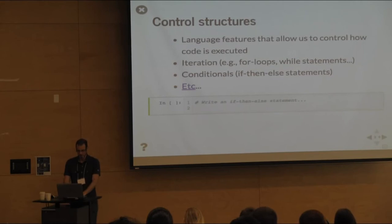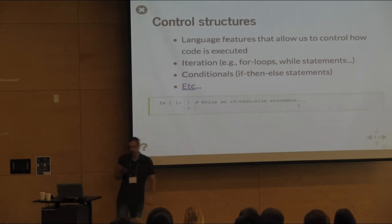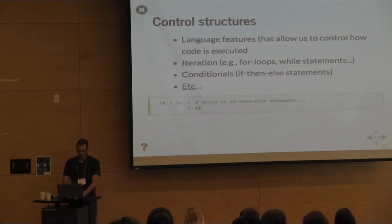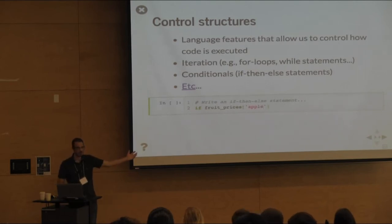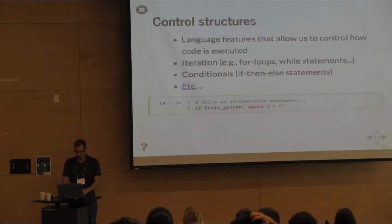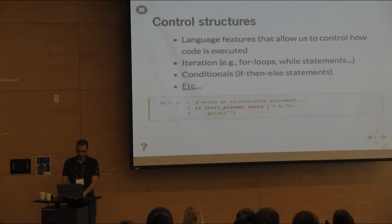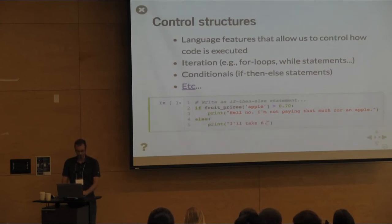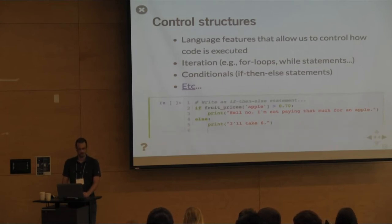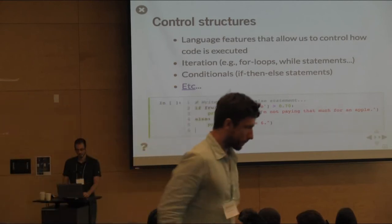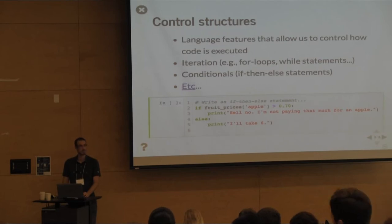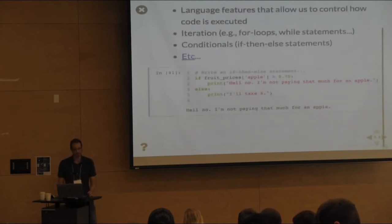To write an if-then-else statement — say we want to print a statement conditional on the price of apples, which recently went up. We say: if fruit_prices['apple'] is greater than 70 cents, print 'hell no, I'm not paying that much for an apple.' Otherwise, we'll take six. When we run this, since apple is 75 cents, it objects — so we have branching behavior depending on the expression.